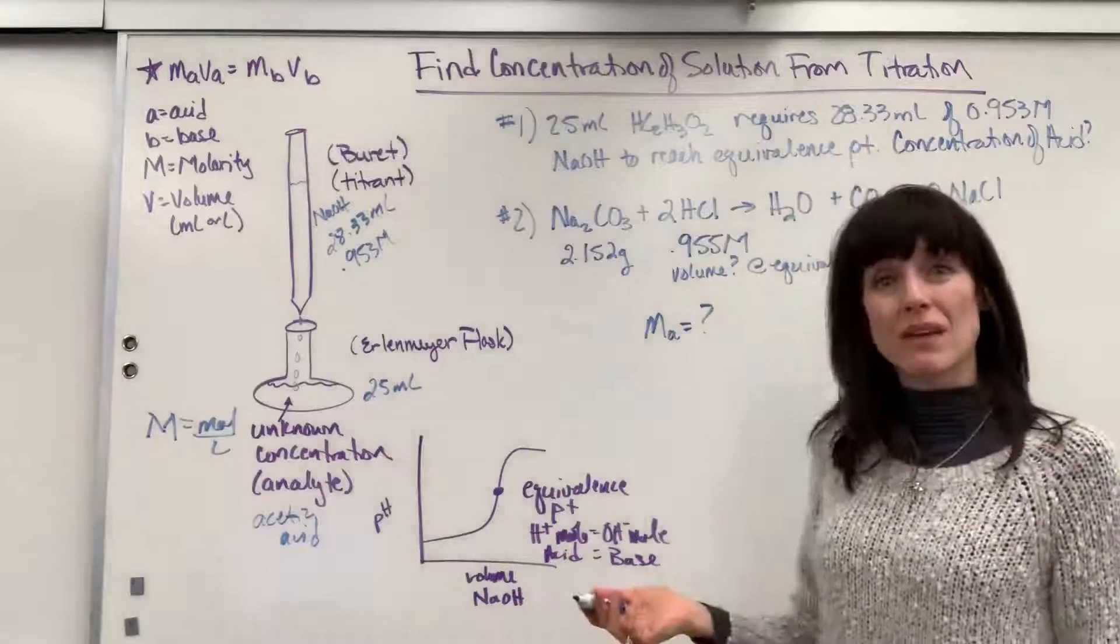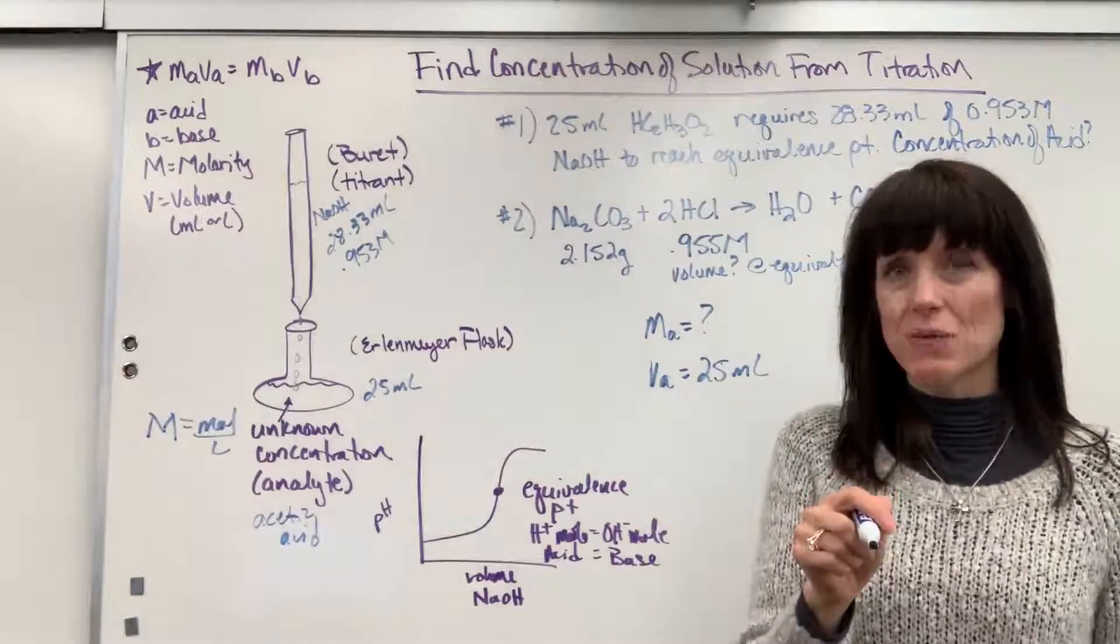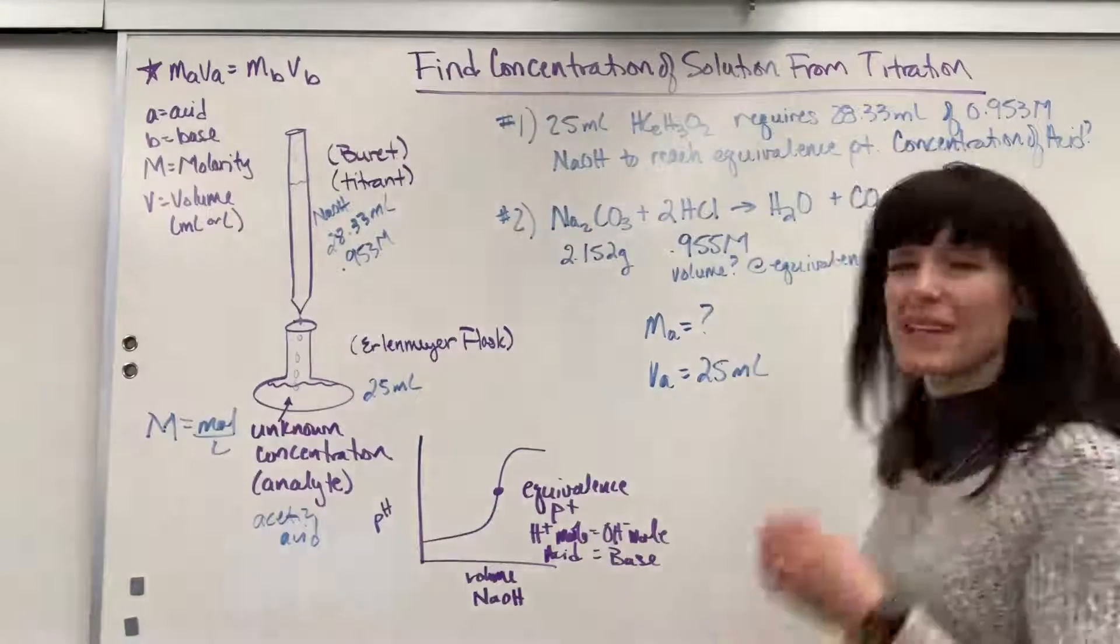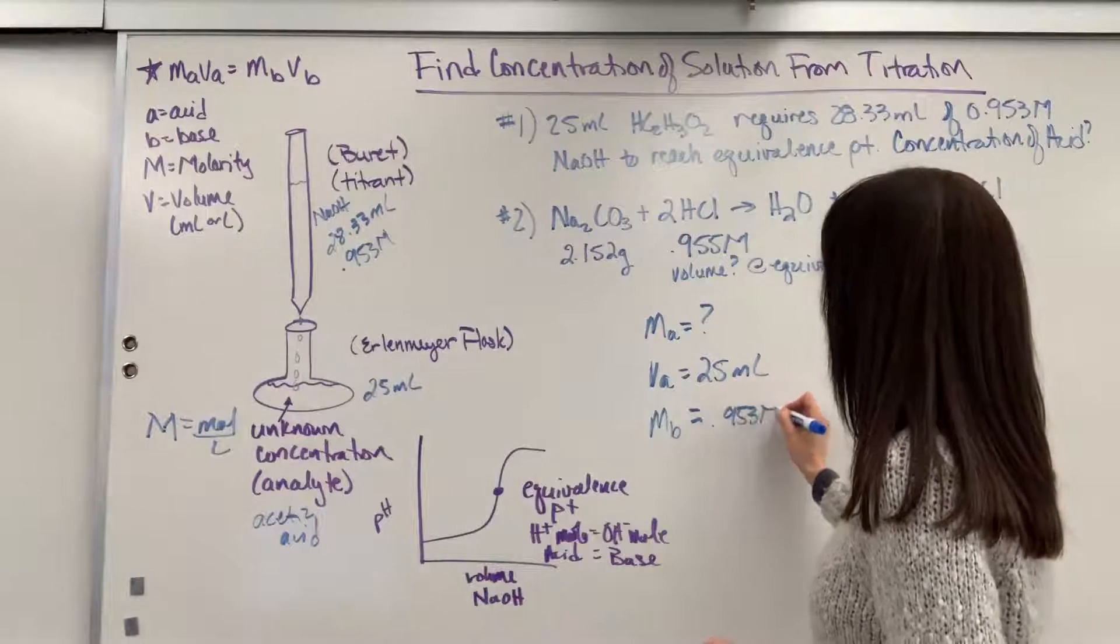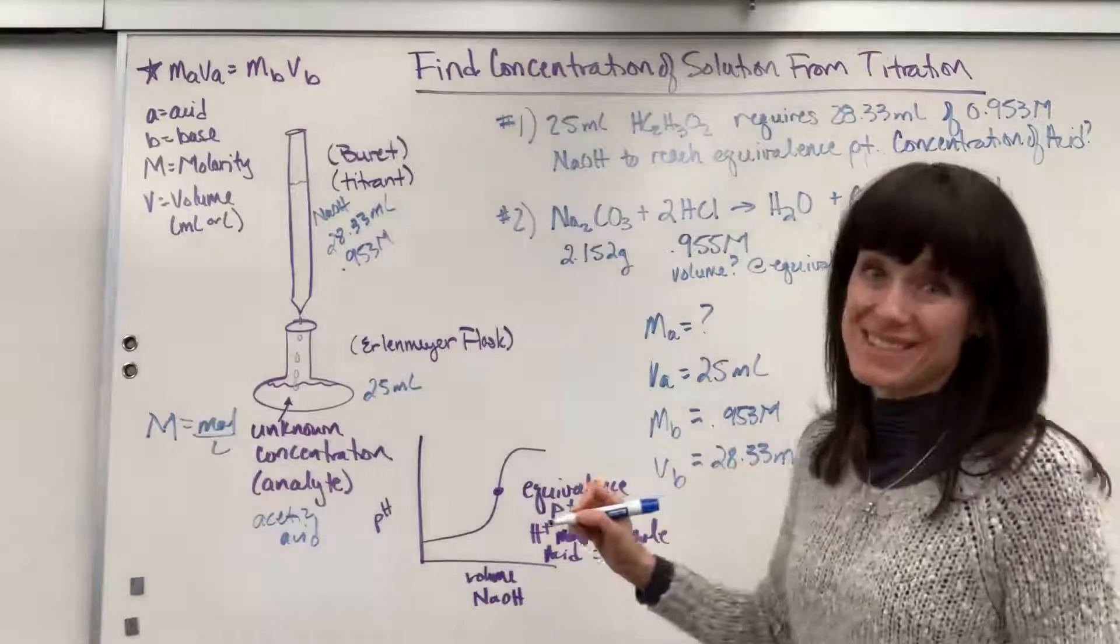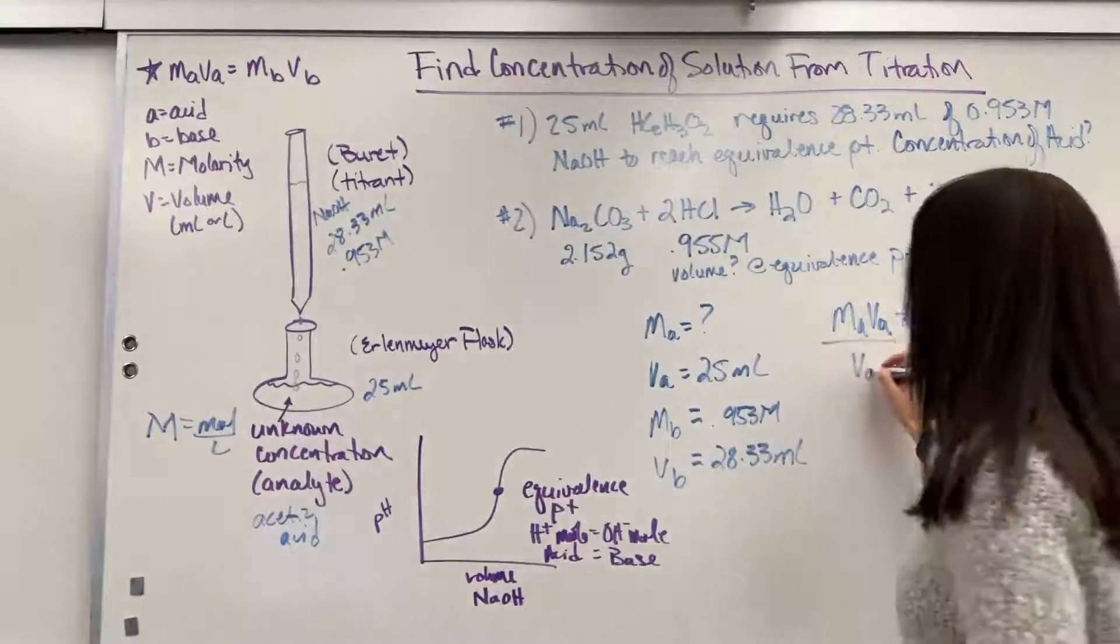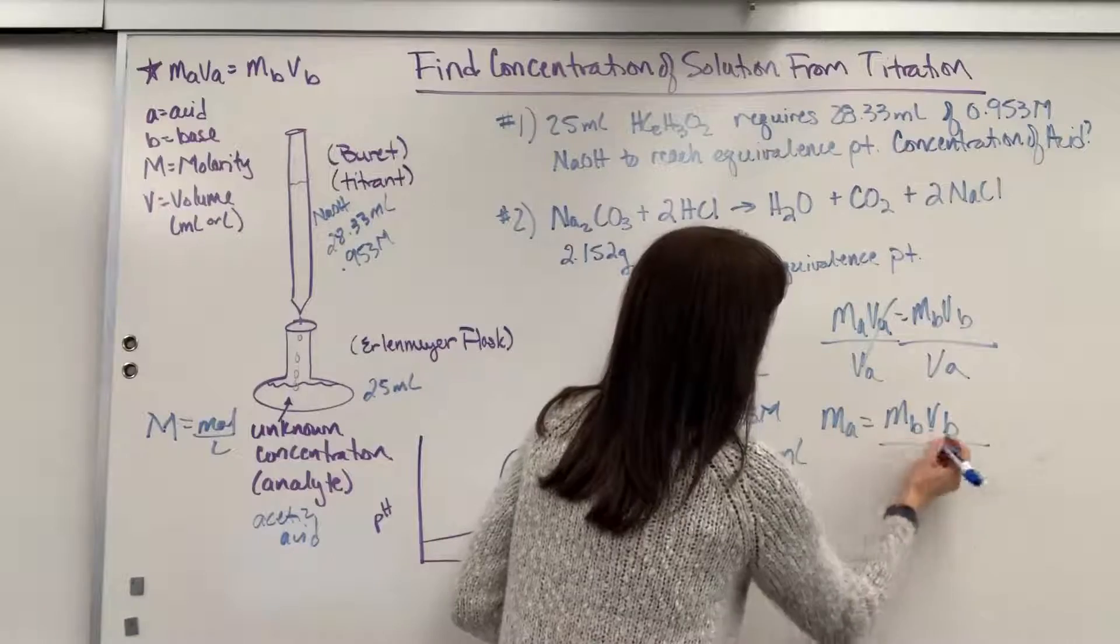So one mole of sodium hydroxide reacts with one mole of acetic acid, so I can go ahead and label. Molarity of the acid - that's what we're looking for. What's the molarity of the acetic acid? The volume of the acetic acid, check it out - I'm going to leave this in mils because when I use this formula, as long as I have the same unit for volume on the acid and the base side, it doesn't matter if it's mils or liters. It's because it cancels out. And then we have the molarity of the base is 0.953 molar. The volume of the base was 28.33 mils. So we've got our formula: MAVA equals MBVB. Let's go ahead and solve for MA. I'll divide both sides by the VA, and MA equals MB times VB divided by VA.